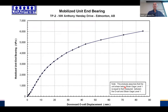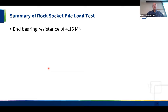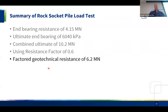This plot shows inferred end bearing resistance versus displacement. The O-cell was slightly above the bottom, so the shaft friction from the pile segment below the plate must be deducted to interpret actual end bearing transferred. At the end of the load test we were mobilizing close to 6000 kPa in end bearing in the bedrock. Summary: end bearing resistance was just over 4 MN, ultimate end bearing approximately 6000 kPa, and combined shaft friction plus end bearing was just over 10 MN.